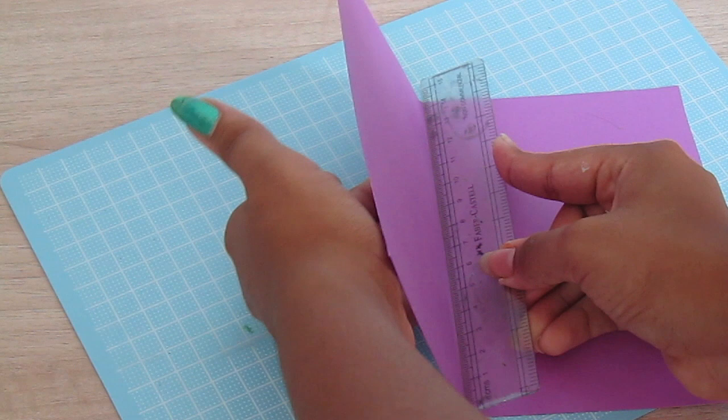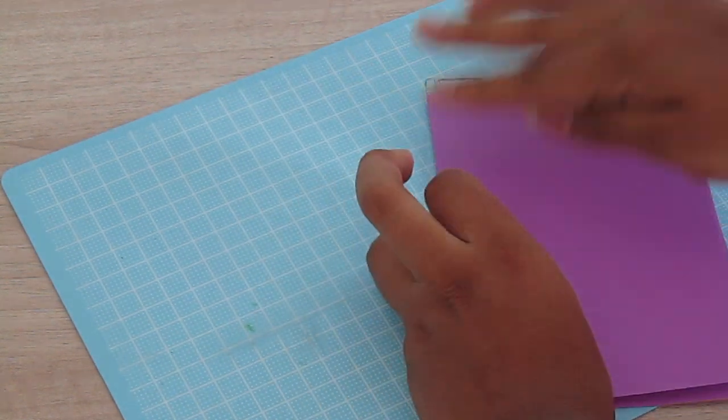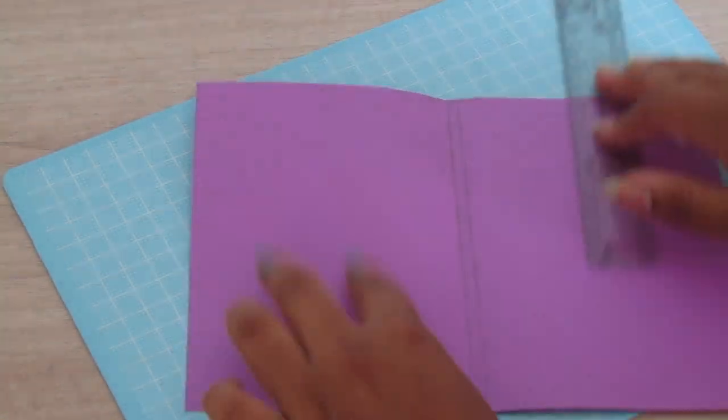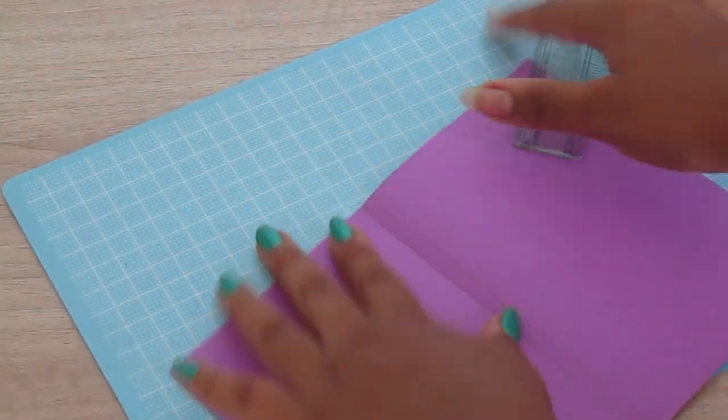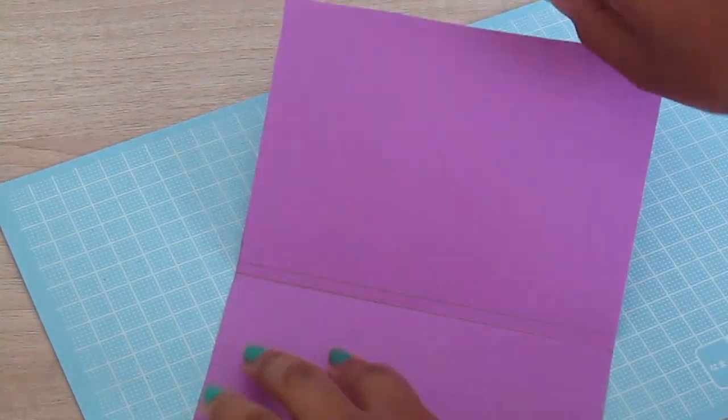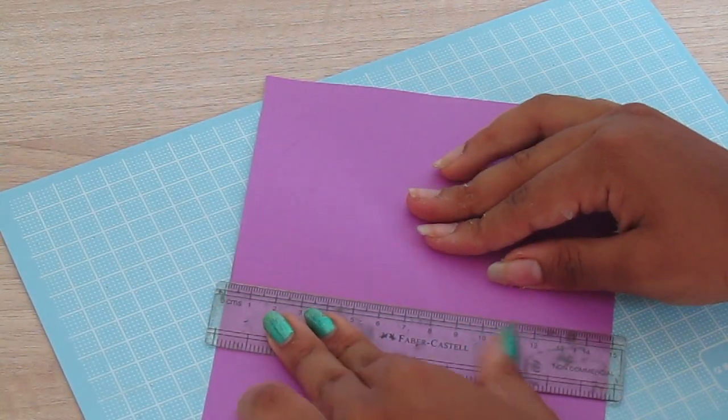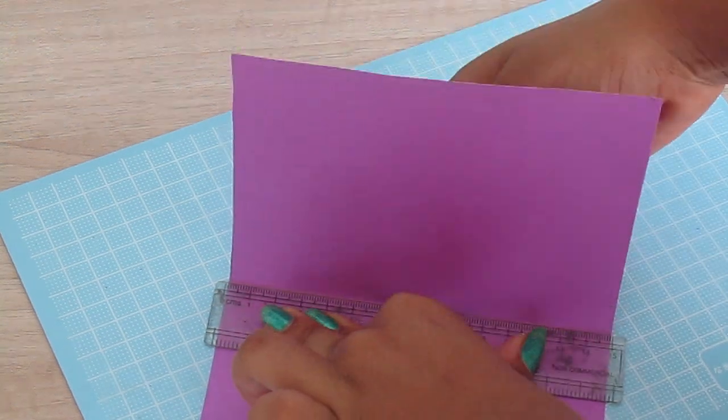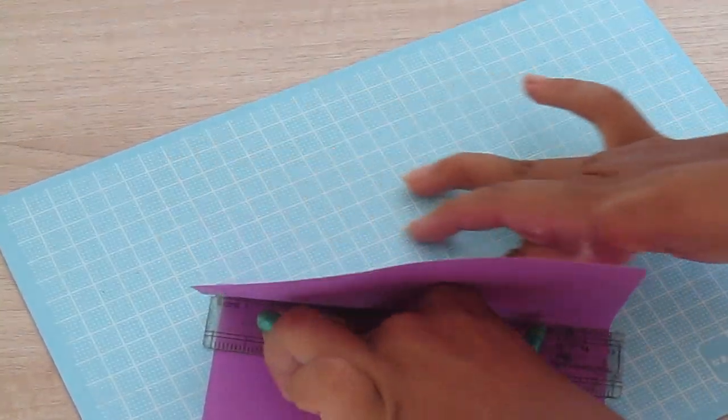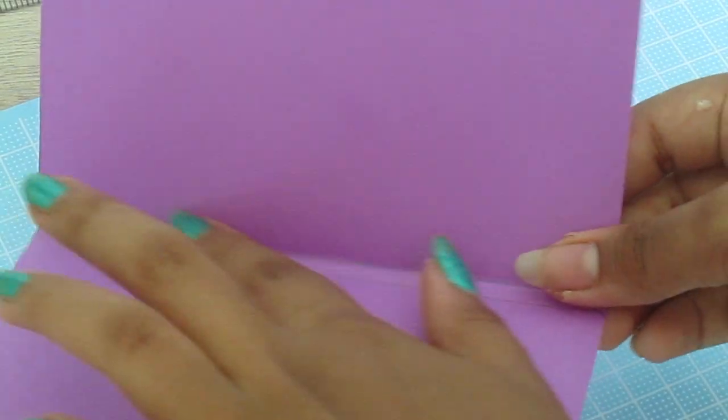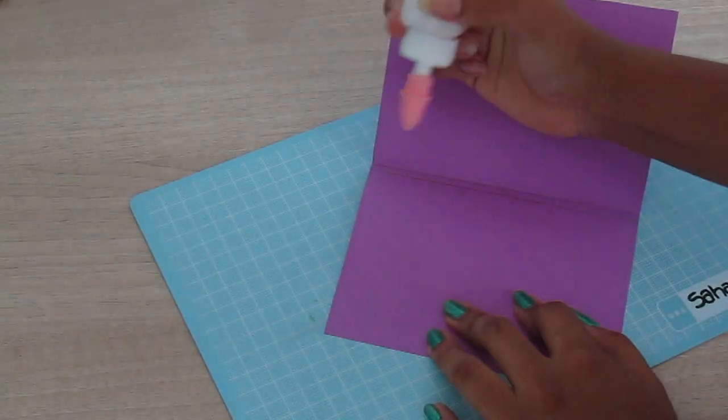Crease on it and do the same for the other side as well. Place your ruler on the line and fold the sheet forward so it creates a crease. So now we've given our book some volume.